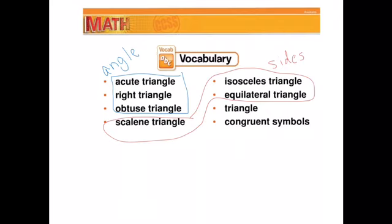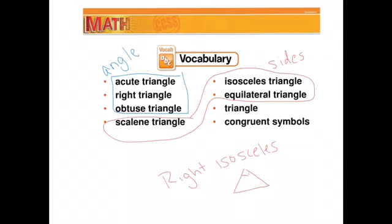So it's possible to have a right isosceles triangle. That means I have a 90 degree angle right here and when I look at these, this side and this side are congruent. That's what these symbols are, where they match up and tell me that they're congruent.